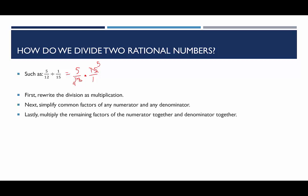Now we're going to multiply the remaining factors of the numerator together: 5 times 5 is 25. Multiply the remaining factors of the denominator together: 4 times 1 is 4, and we're done. We might want to double check — do 25 and 4 have any common factors? They have a common factor of 1, but no other common factors. You need to talk to your instructor to see if you can leave your answer as an improper fraction such as 25 fourths, or if you need to convert it to a mixed number — that would be 6 and 1 fourth.